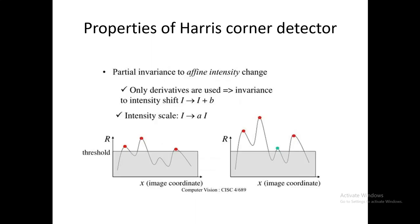Now let's see the response of the Harris detector with a change in intensity value. The moment matrix is made up of the gradient in the x direction (Ix), the gradient in the y direction (Iy), and the product Ix·Iy. If a constant is added to the image, it doesn't change the derivative of that image, so the detector is invariant to additive shifts in intensity.